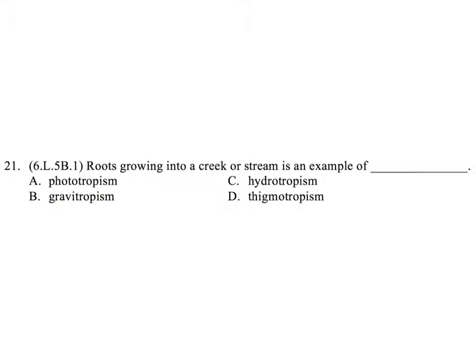Question 21. Roots growing into a creek or stream is an example of: A. Phototropism. B. Gravitropism. C. Hydrotropism. D. Thigmotropism.